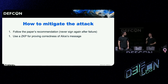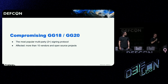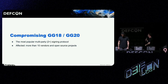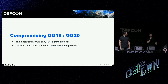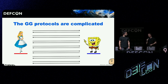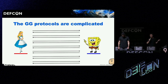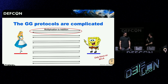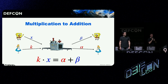We're on to our second attack: the most popular multi-party signing protocol, the GG18 and GG20 family, which affected many vendors and open source projects. Unlike Lindell 17, the GG protocols are very complicated — signing requires between seven and nine rounds of communication. We don't need to explain all of that, because the entire vulnerability happens during the very first round, which implements what's called a multiplication-to-addition, or MTA. The MTA is a way to transform two multiplicative shares, K and X, into two additive shares, alpha and beta, where K times X equals alpha plus beta.